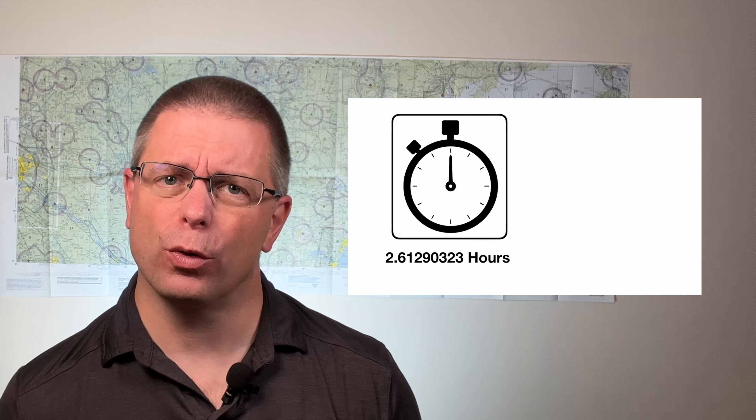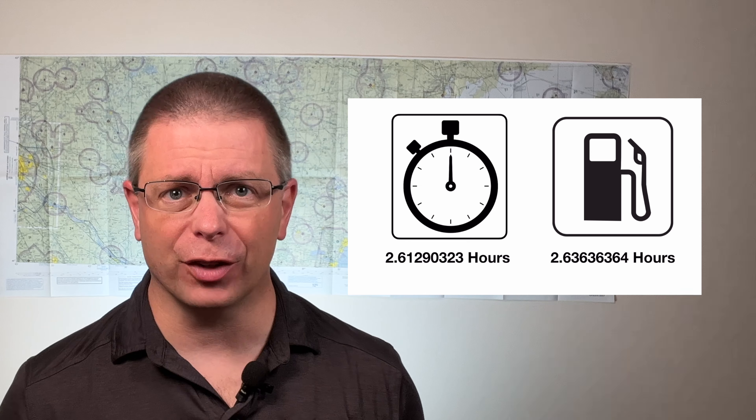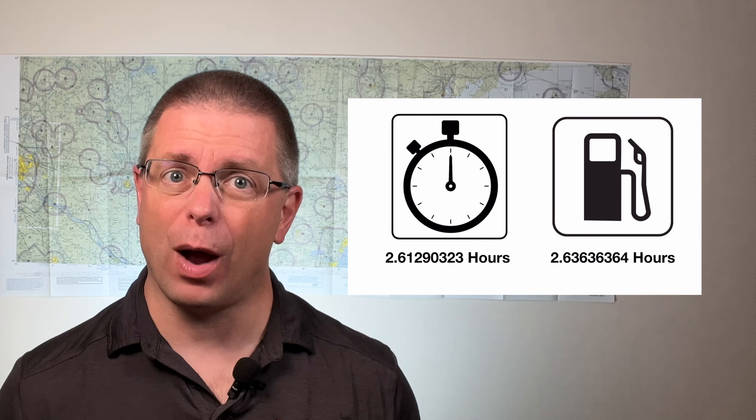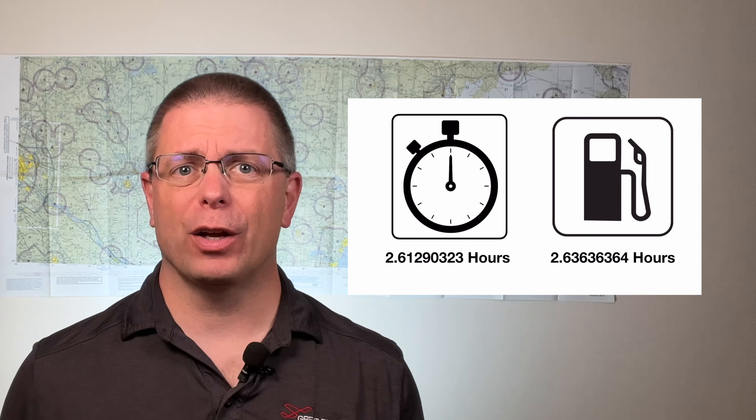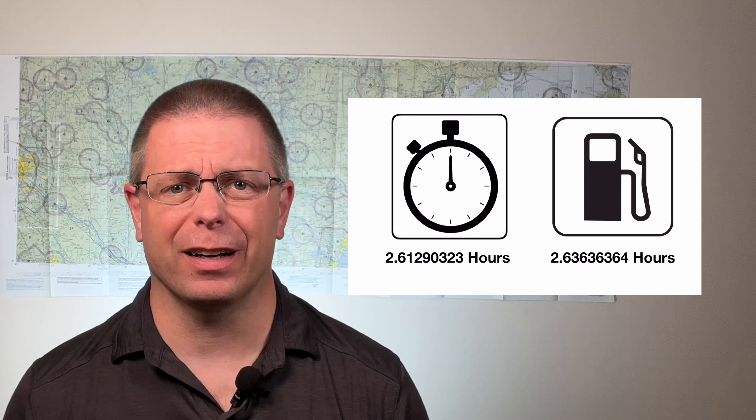Could we make the trip safely if we didn't round pessimistically? Well, maybe. Remember, the exact time for travel was 2.61290323 hours, and we have 2.63636364 hours of fuel. So if everything goes perfectly, there may be just enough fuel to get there. But considering the risks of being wrong, would you be willing to bet your life that things are going to work out exactly as planned? I'm not.